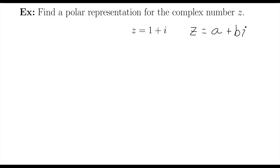So in this case, I should identify a and b. A is 1, and b, the number attached to i, is an understood 1 out in the front, so it's also 1.